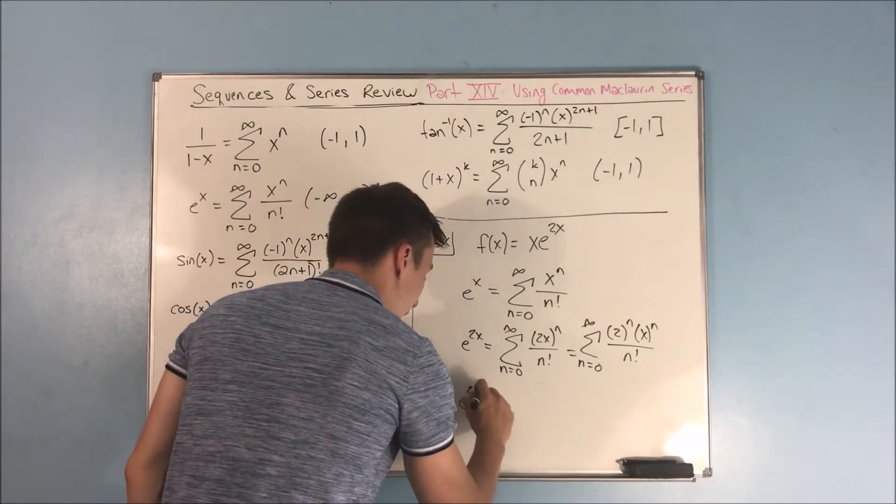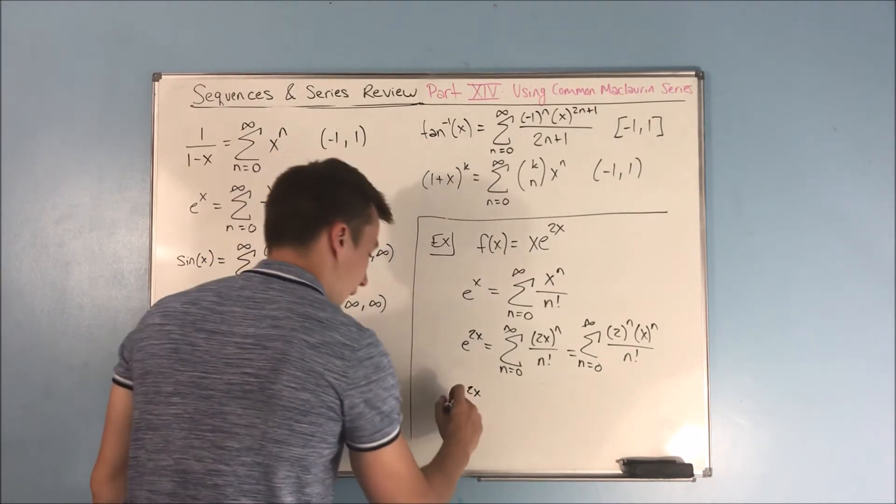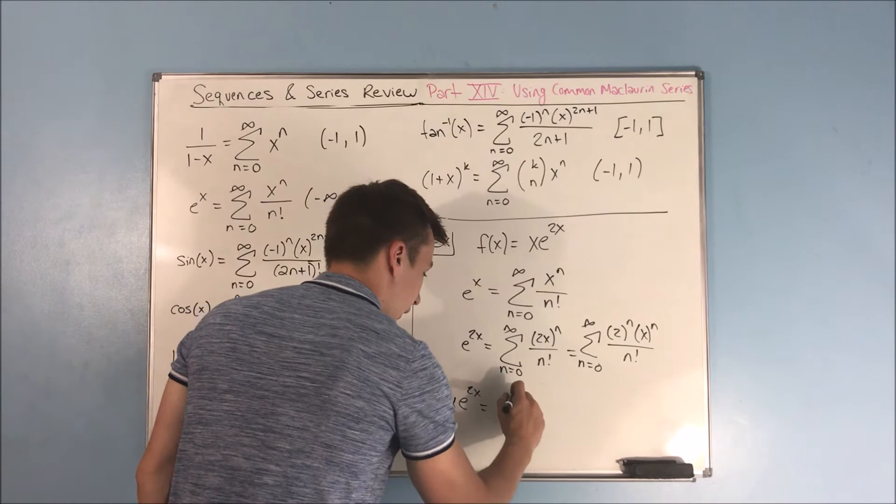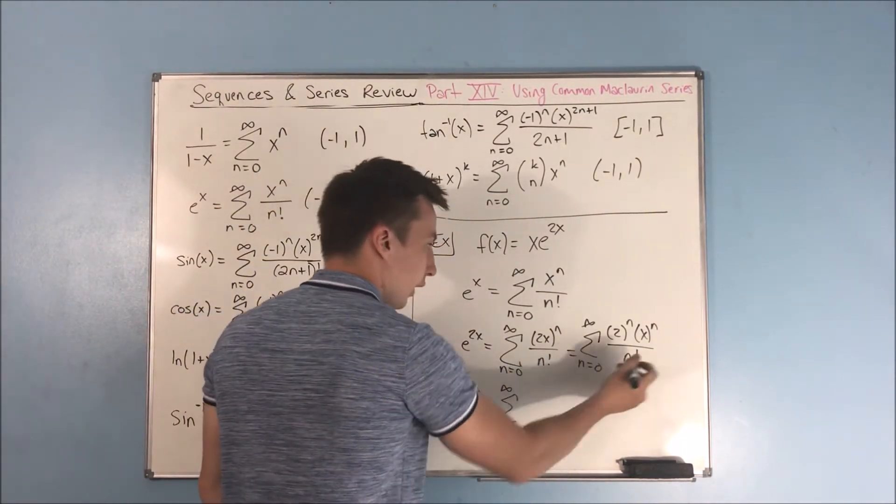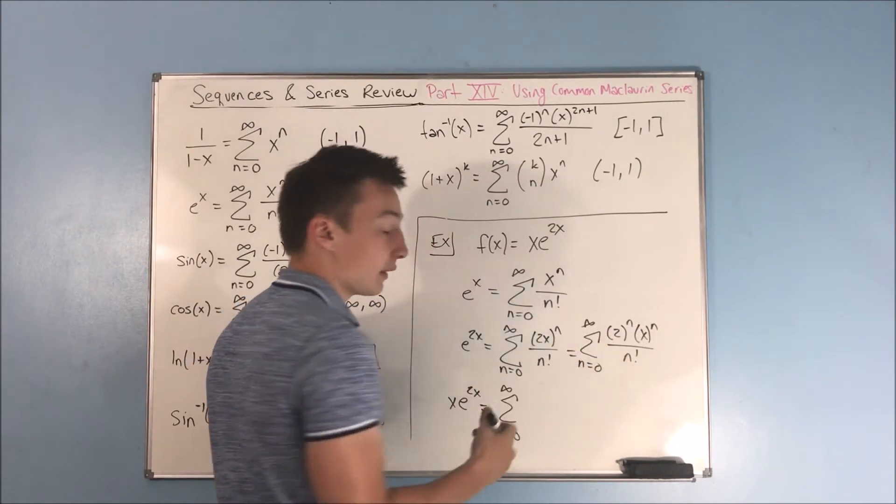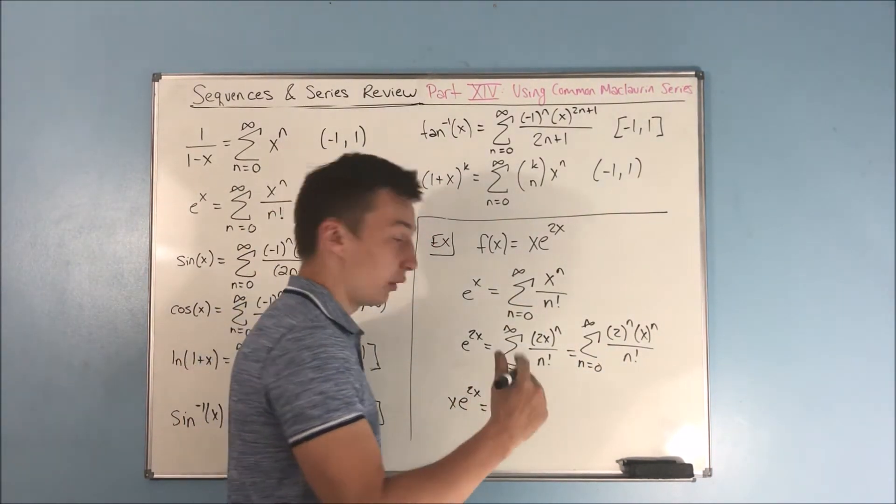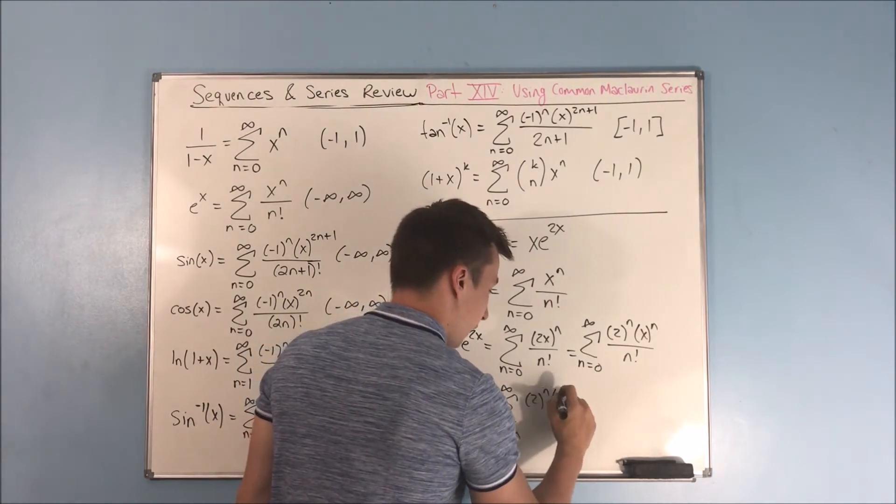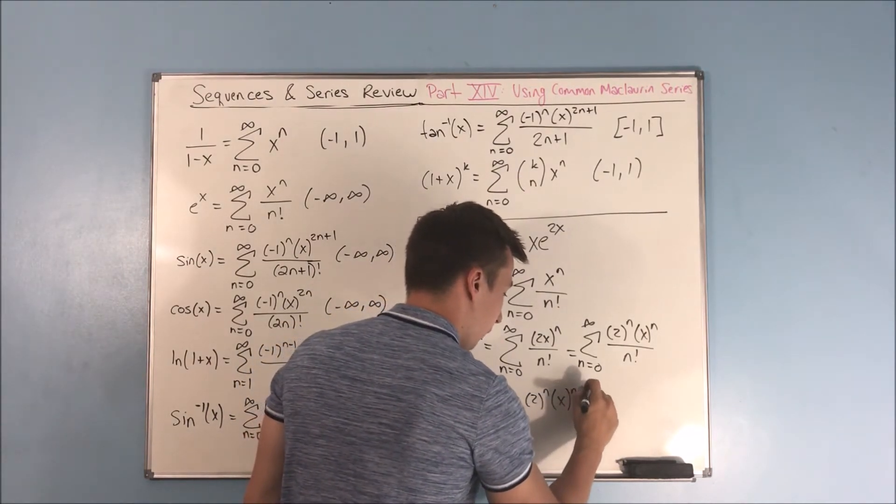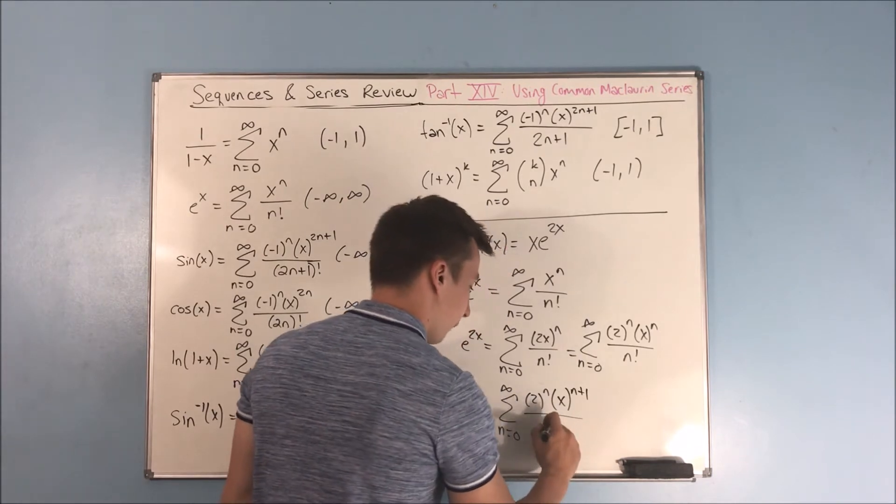It'll be nicer because then we have x by itself. So if we're multiplying an x through, it'll be easier for our exponent. So if we now have not just e to the 2x, but x e to the 2x, we have now the sum from n equals 0 to infinity of... We multiply that x through, which makes this exponent n plus 1.